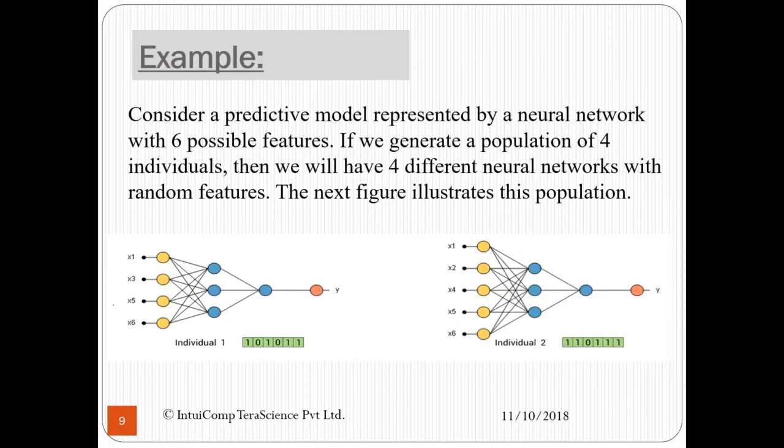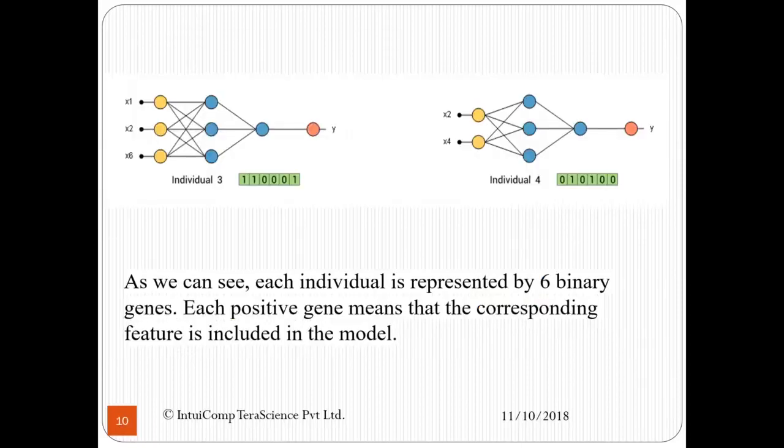Similarly, individual 2 with a chromosome of 110111 means that we have selected x1, x2, x4, x5, and x6 as the features. Similarly, individual 3 and individual 4 are also created. As you can see, each individual is represented by six binary genes. A chromosome comprises of its constituent genes which constitute its separate alleles. Each positive gene means that the corresponding feature is included in the model.